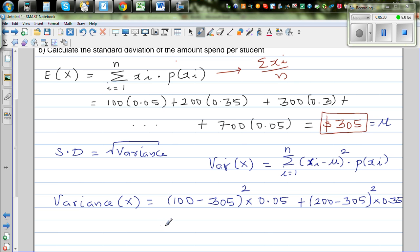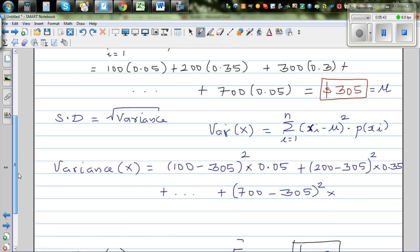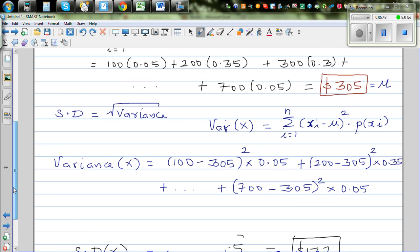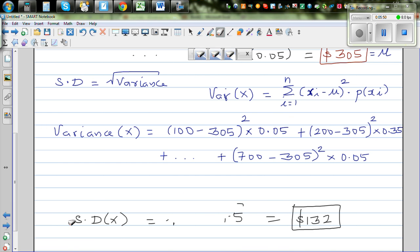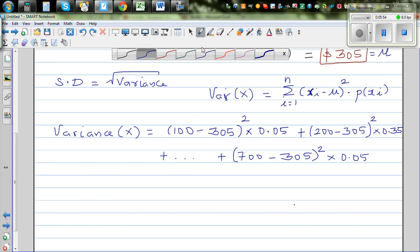So if you add all these together, plus dot dot dot, plus 700 minus 305, the whole squared times the respective probability, which is 0.05. So here, let me cancel this. So I have worked this out, you can check it yourself.